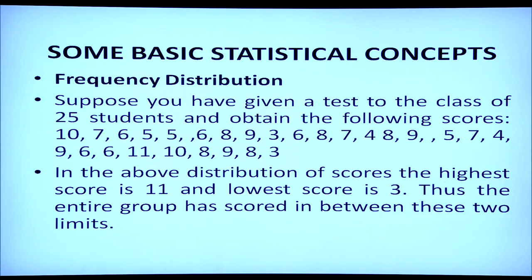The scores are: 10, 7, 6, 5, 5, 6, 8, 9, 3, 6, 8, 7, 4, 8, 9, 5, 7, 4, 9, 6, 6, 11, 10, 8, 9, 8, 3. In the above distribution of scores, the highest score is 11 and the lowest score is 3. Thus, the entire group has scored between these two limits of 11 and 3.